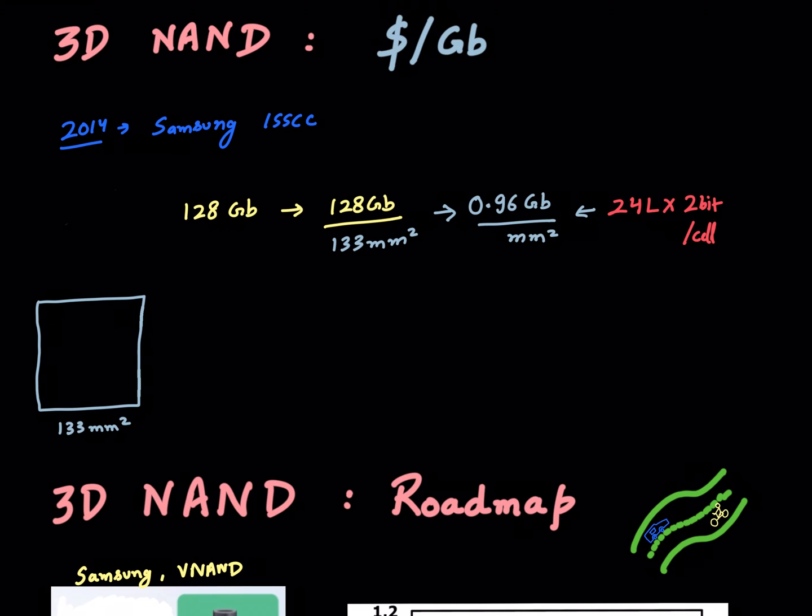We were talking about how to reduce the cost of 3D NAND memory—that is, how to reduce this dollars per gigabit number. We can do that in two ways, as we discussed in one of the previous videos.